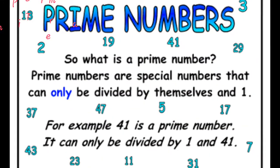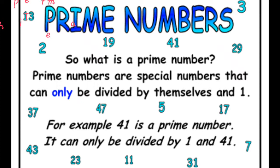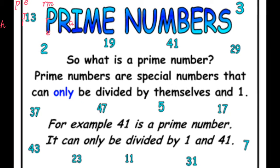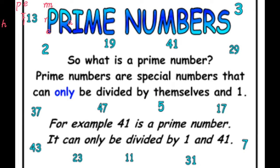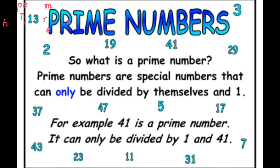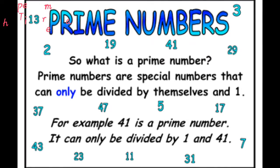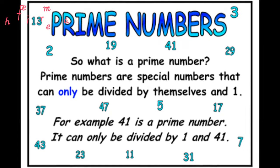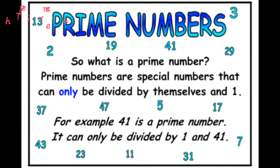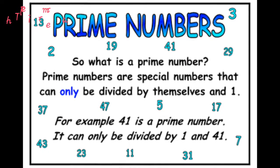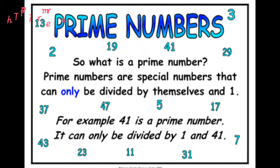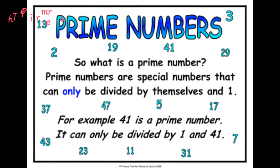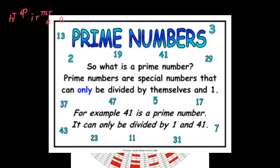After all, with any concept, the concrete method should be used before automated methods. Take your calculator and key in the number you are trying to determine is prime by first dividing the number by 2, then by 3, to see if the result is a rounded whole number. Let's take 57 and first divide it by 2. Does it come out to a whole number? No, you'll discover it's 27.5.